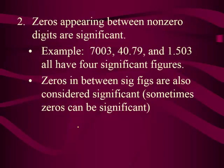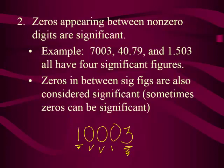Let me give you one additional example: 10,003. You know the one counts, and you know the three counts. You have zeros in between. It doesn't matter how many zeros appear in between those two digits — they will all become significant. So in 10,003, how many sig figs are there? Five. Does that make sense a little better?